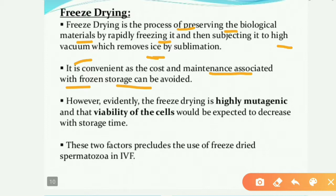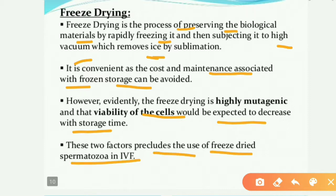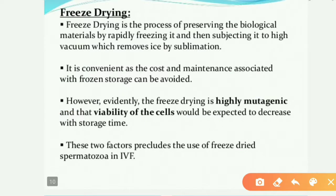However, freeze drying is highly mutagenic — it causes chromosomal aberrations and changes in genetic makeup. Additionally, the viability of cells decreases with storage time. These two factors — being highly mutagenic and decreasing viability over time — preclude the use of freeze-dried spermatozoa in IVF. Therefore, freeze drying cannot be used for this purpose.